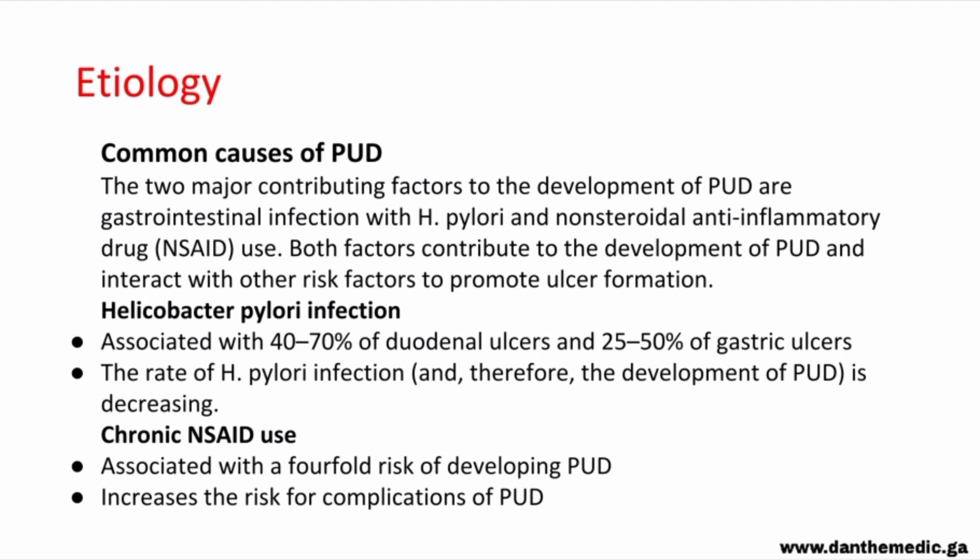There are two major contributing factors to the development of peptic ulcer disease: infection with H. pylori and usage of non-steroidal anti-inflammatory drugs. H. pylori is associated with about 40–70% of all duodenal ulcers and about 20–25% of all gastric ulcers. The rate of H. pylori infection is decreasing, so peptic ulcer due to H. pylori infection is also decreasing.